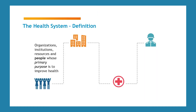A health system can be defined as all the organizations, institutions, resources, and crucially the people — so patients and families as well as healthcare professionals — whose aims are to improve health. Hospitals, healthcare providers, doctors, and nurses are well-known parts of the health system. Other important parts include government authorities, communities like ministries of health, public health institutes, and health financing bodies. Private sector entities are also an important part and can include diagnostic centers, pharmacies, and medical product manufacturers. Communities, of course, are a crucial part of health systems.